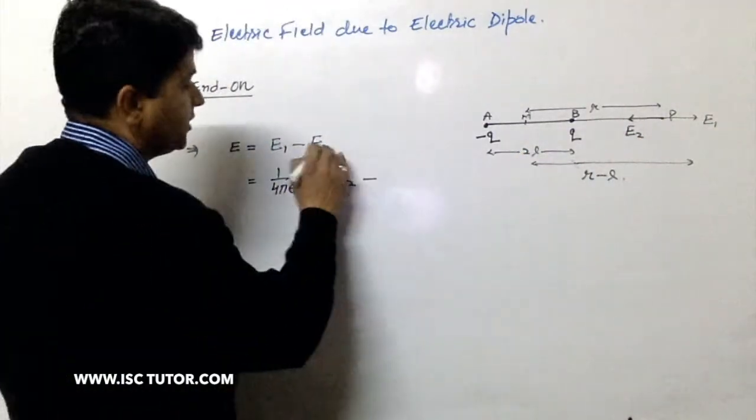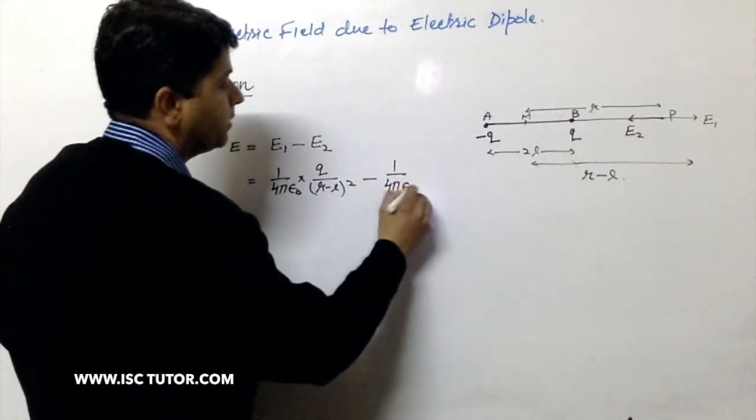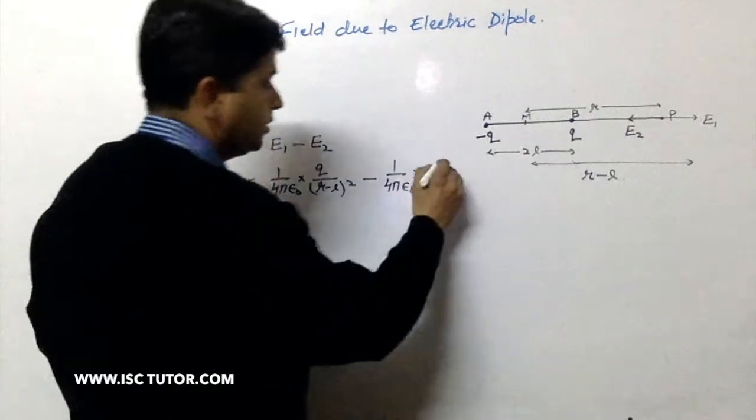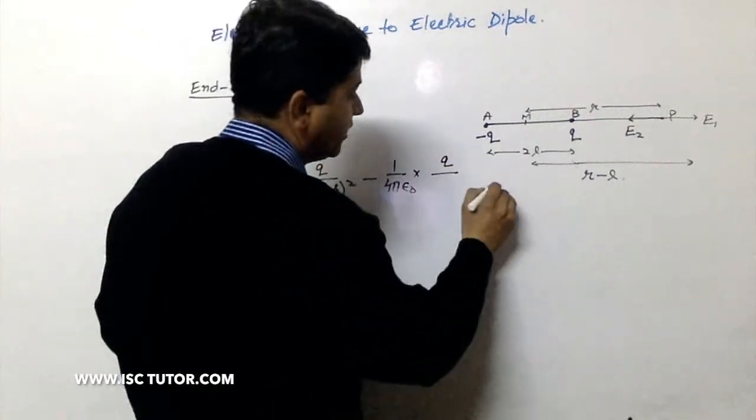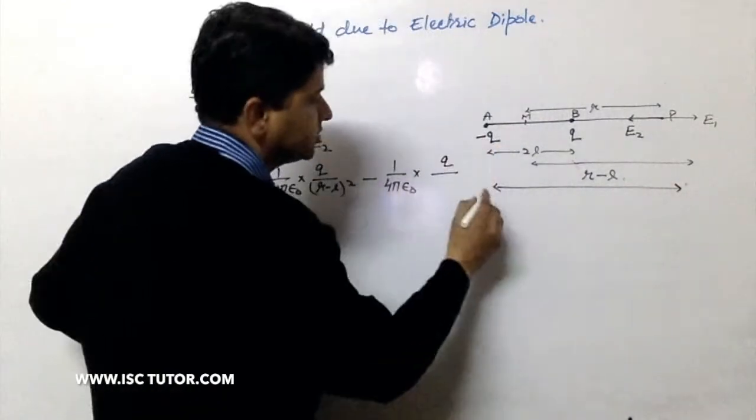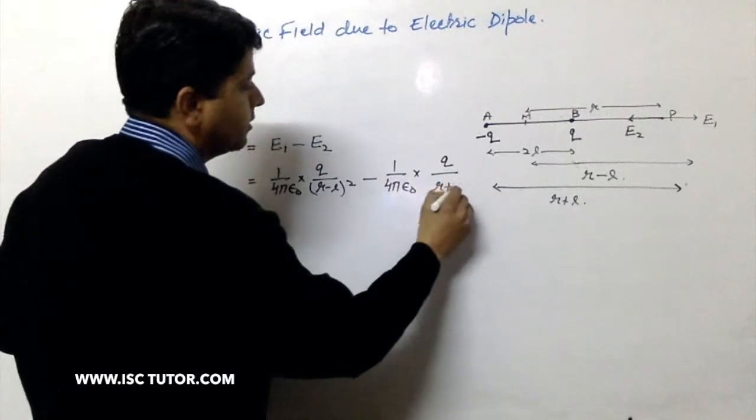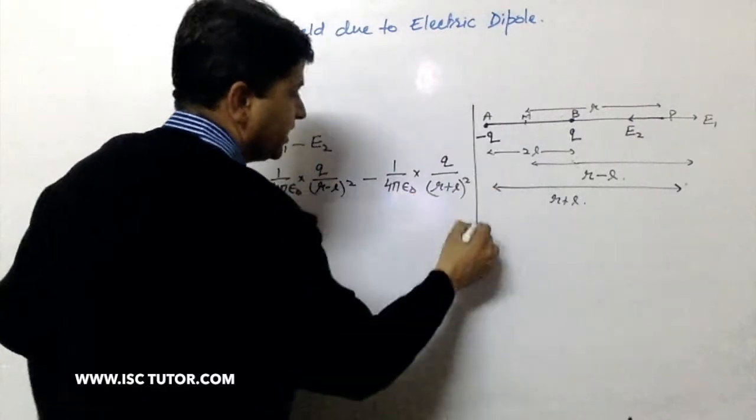In this situation now I'm going to write E2 which is 1 upon 4 pi epsilon 0, Q upon, and now I have to calculate this whole distance between P and the charge minus Q which will be R plus L. So I'll write square of R plus L.